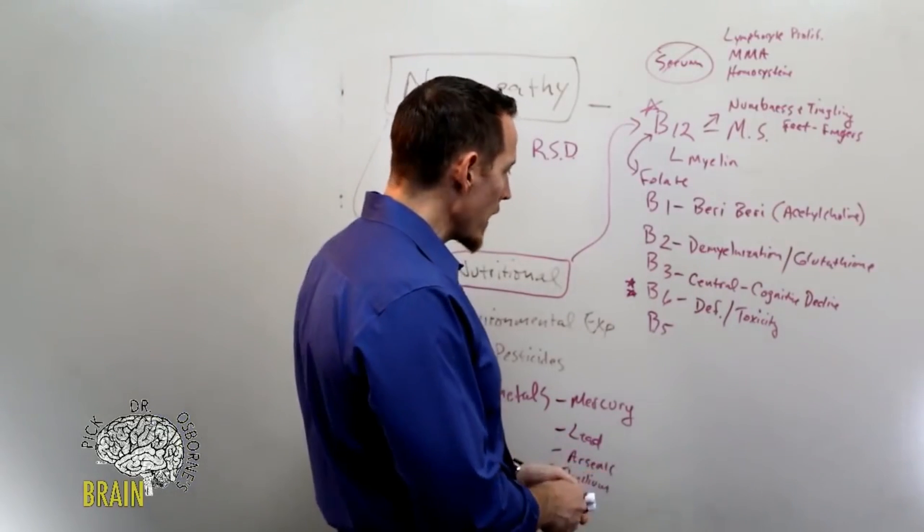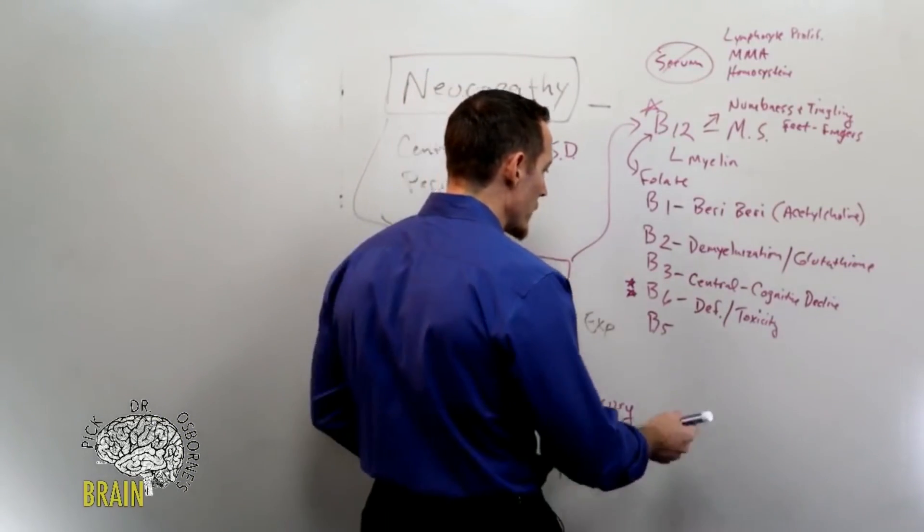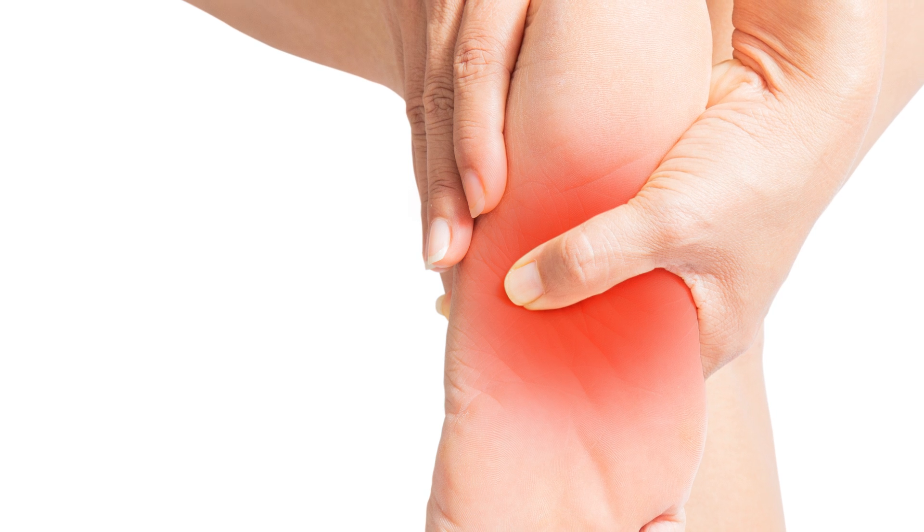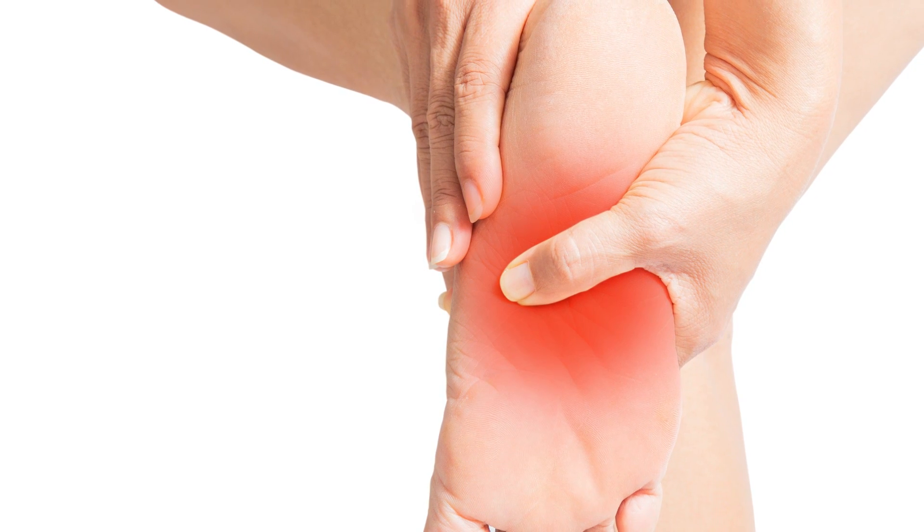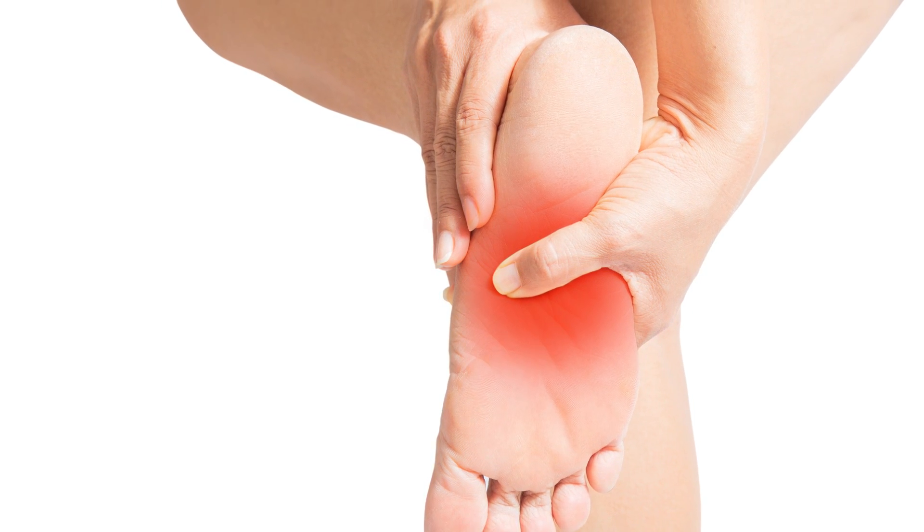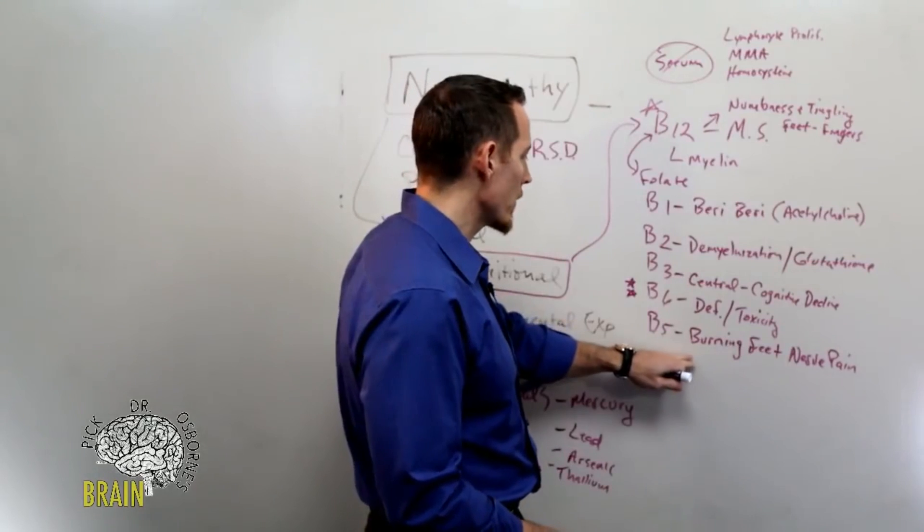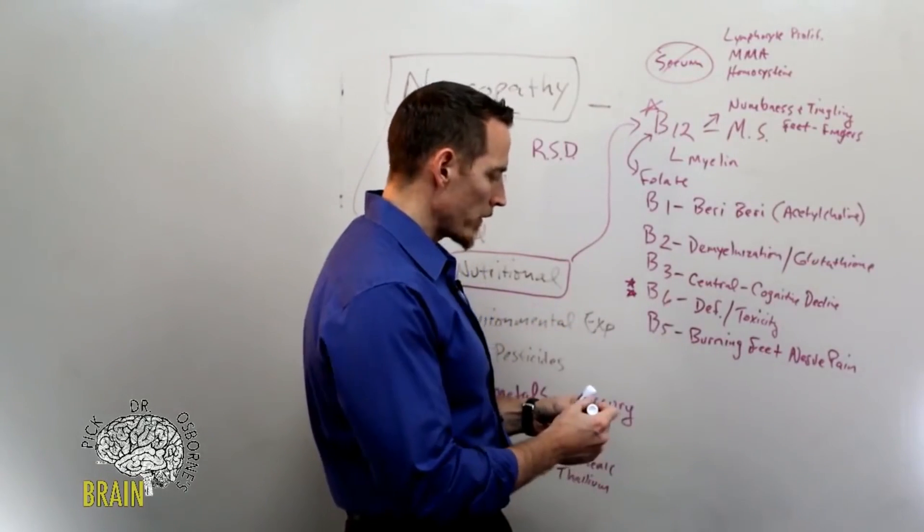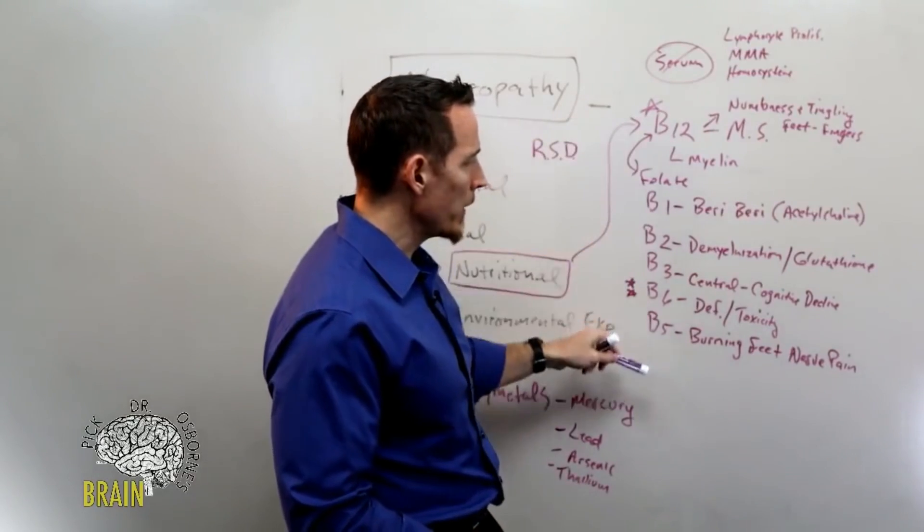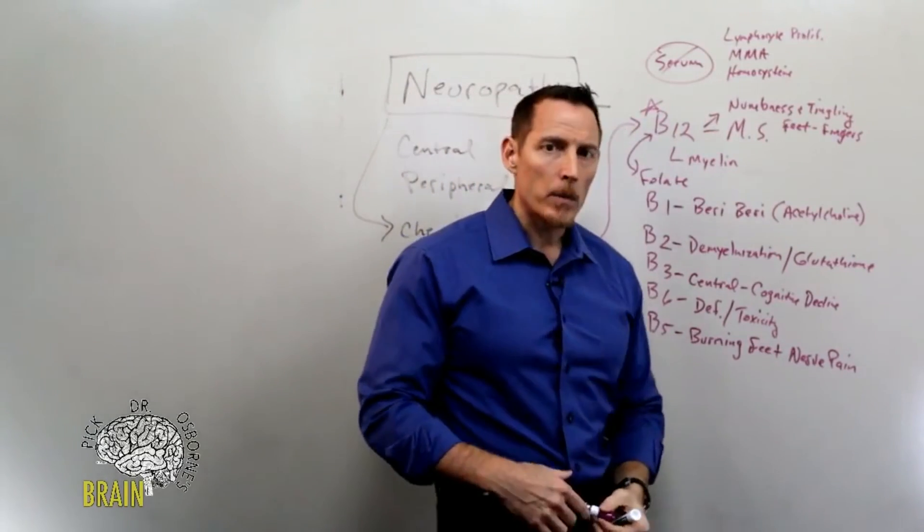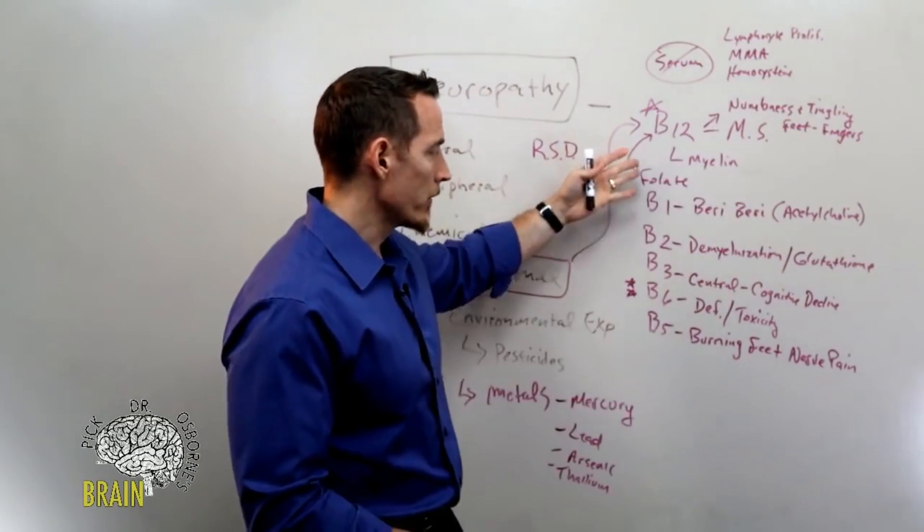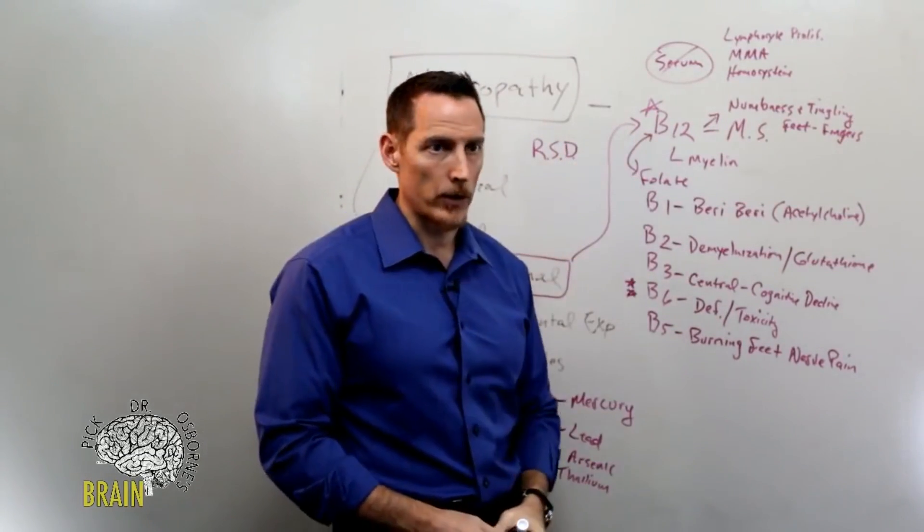Then vitamin B5. Now this one's really unique in the way that it presents. This is oftentimes referred to as the burning foot neuropathy. If you get burning in your feet, that's kind of a hallmark or classic of vitamin B5 deficiency. So that burning foot or burning feet neuropathy or nerve pain is very very common in vitamin B5 deficiency. Again, your B vitamins as a family are very very important for neurological function, and so a deficiency in literally any one of them can contribute to neurological types of symptoms.